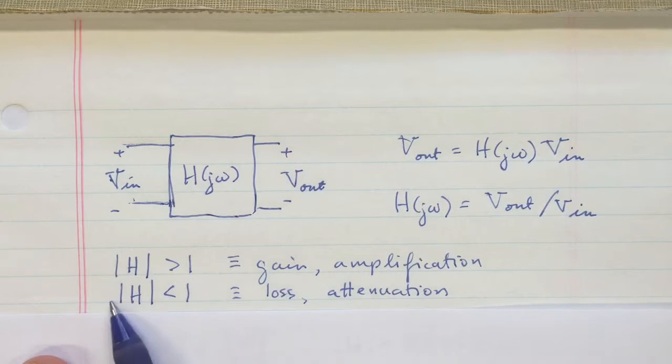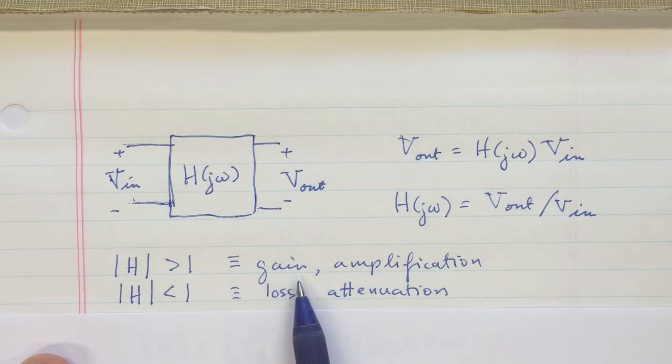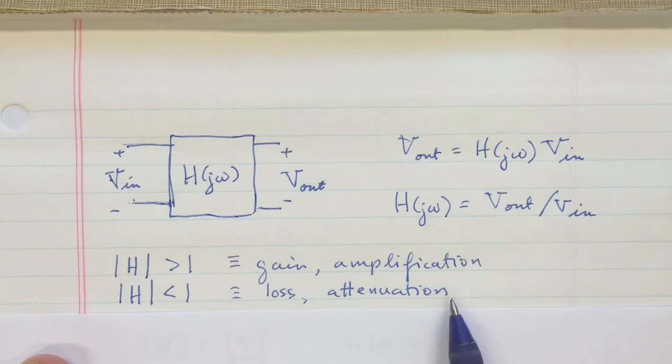In general, if the magnitude of the transfer function |H| is larger than one, you talk about having gain or amplification. If it's less than one, you talk about having loss or attenuation. So this might be the situation with an amplifier, whereas this might be the situation for a filter.